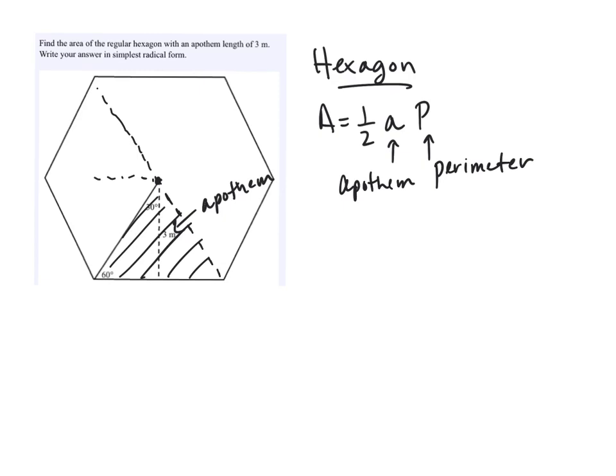You'll see if you connect the center with every vertex that there are one, two, three, four, five, six triangles. So find the area of one of those triangles and multiply by six.